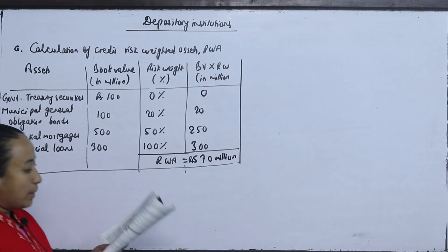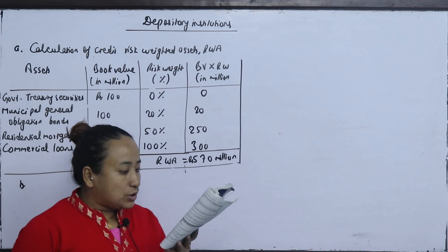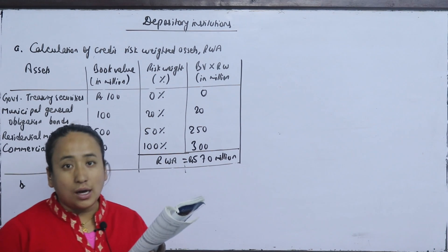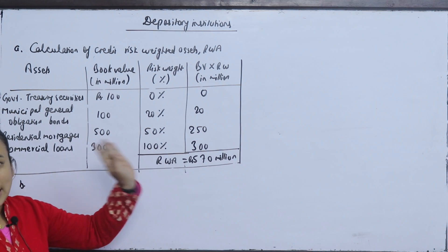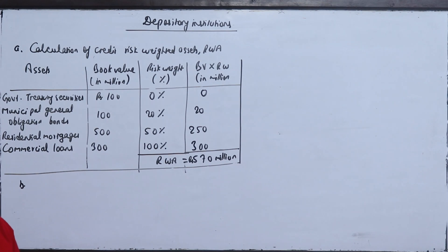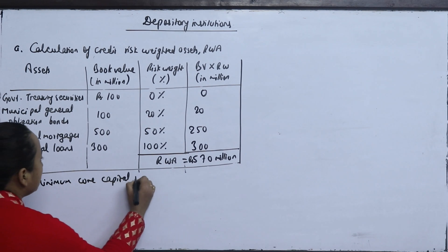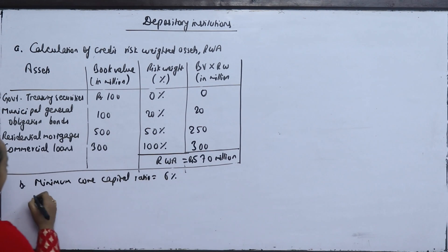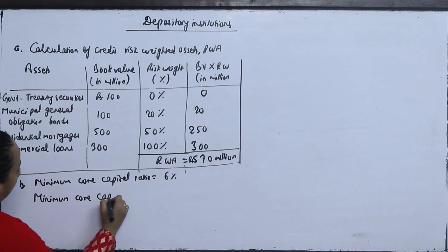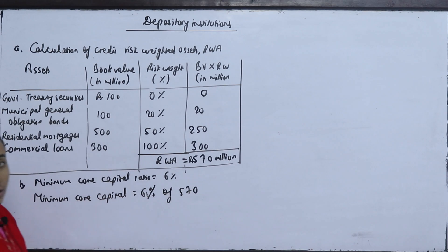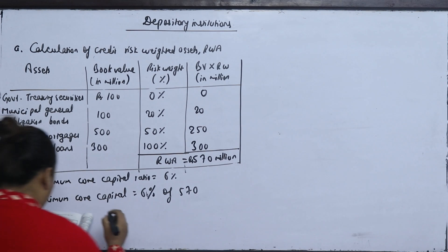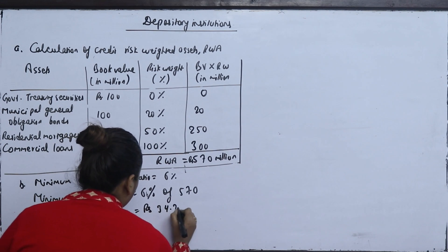What is the minimum core capital requirement as per Nepal Rastra Bank directives? The minimum core capital ratio is 6% of risk-weighted assets. Minimum core capital equals 6% of 570 million, which equals 34.20 million.